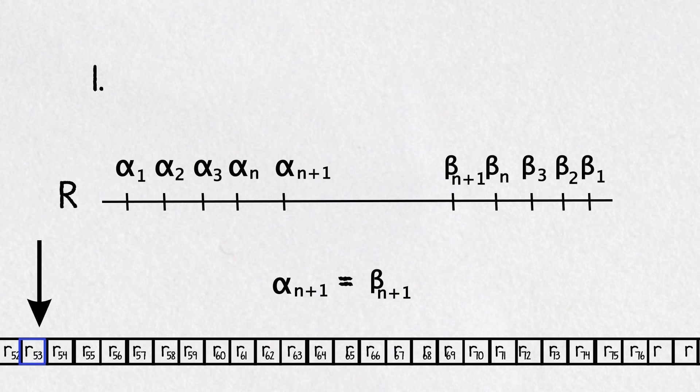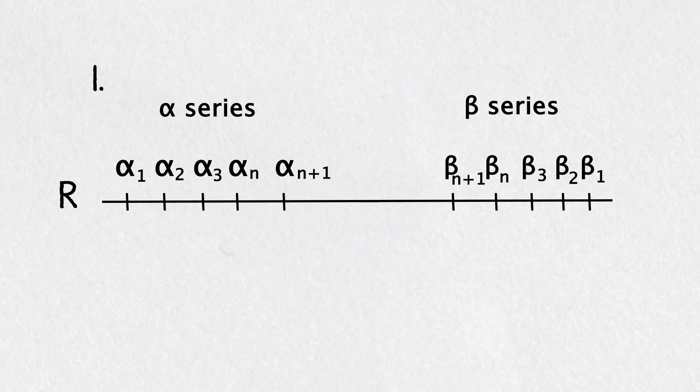Now we have two series, the alpha series and the beta series. We can take the limit of those series, in other words what the alpha and the beta series converge to, and call them alpha infinity and beta infinity. In a full mathematical proof we would have to show that the series do in fact converge but just take my word for it.